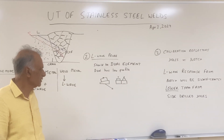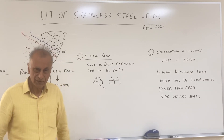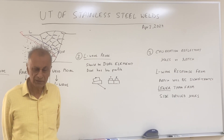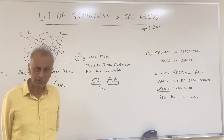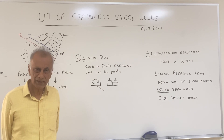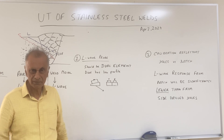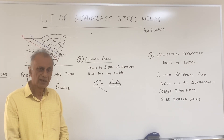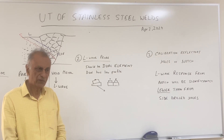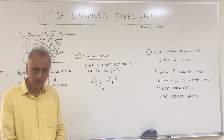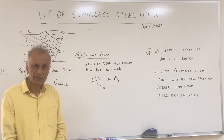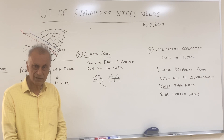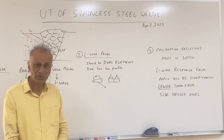The third point is what type of calibration reflector to use. Normally we can use either side-drilled holes or the notch — the 10% notch. For shear waves, it doesn't make much difference in sensitivity whether we use the notch or the side-drilled hole, which is why codes allow either one. However, there is a significant difference for refractive L-waves: the reflection from the notch as compared to the hole will be significantly lower. So if you use side-drilled holes to create your reference level, the sensitivity on the ID surface will be significantly lower.